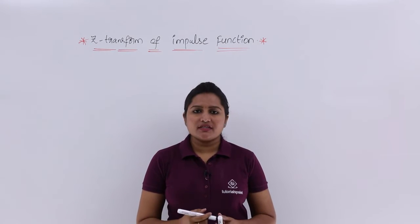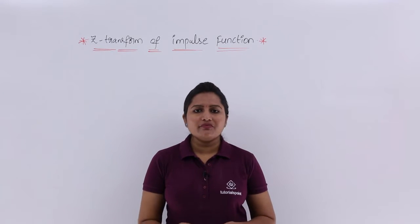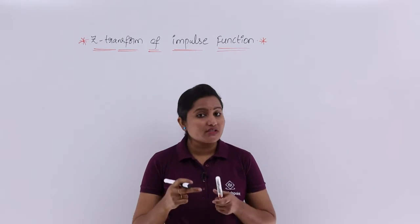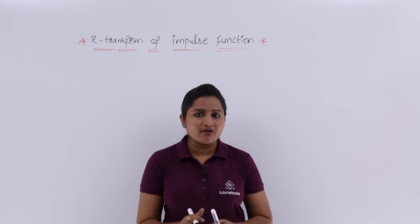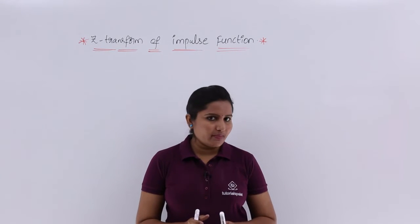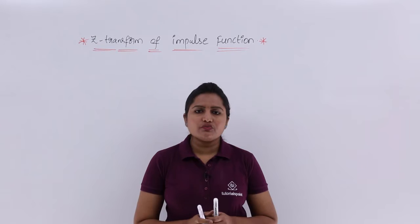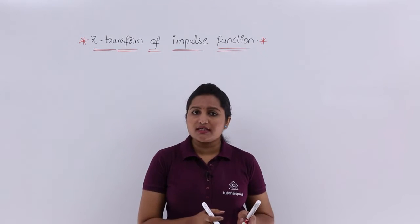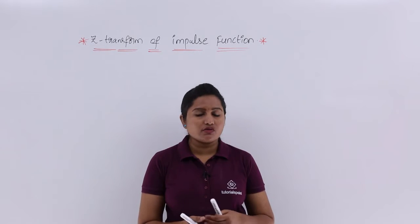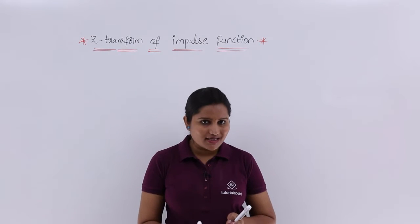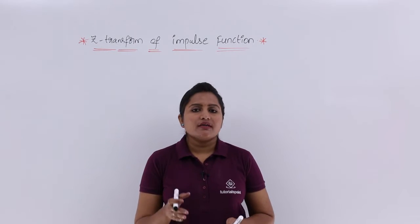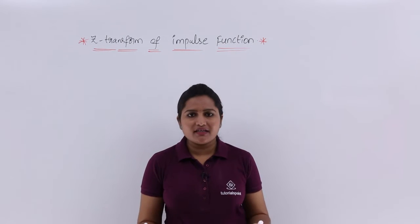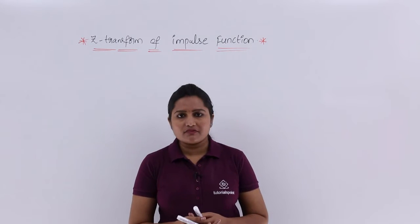In this video we are going to derive the Z transform of impulse function. The impulse function is δ(t) in continuous form, but here we consider δ(n), the discrete impulse function, because Z transform is applied to discrete signals only. So if you are asked to find the Z transform of an impulse function, that is definitely for the discrete impulse function only.